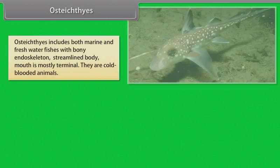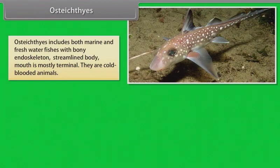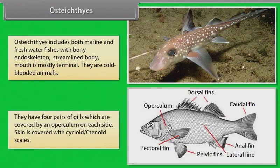Osteichthyes. Osteichthyes includes both marine and freshwater fishes with bony endoskeleton and streamlined body. Mouth is mostly terminal. They are cold-blooded animals. They have four pairs of gills, which are covered by an operculum on each side. Skin is covered with cycloid or ctenoid scales.